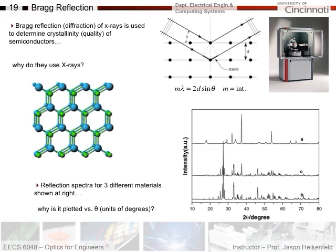Here's a reflected intensity spectra for a couple of different materials — A, B, and C — versus units of degrees. You put your sample in the system and rotate it back and forth through these degrees. You'll see intensities spike up at different peaks. As you rotate through different angles, peaks appear and tell you things like the spacing between layers, the chemical bonding, and how crystalline the material is. If it's very amorphous, you won't get a nice precise reflection peak — it'll be broad and shallow. This is a great tool used for materials characterization.